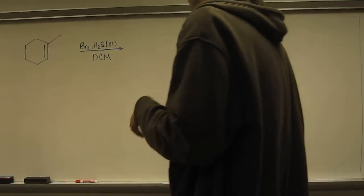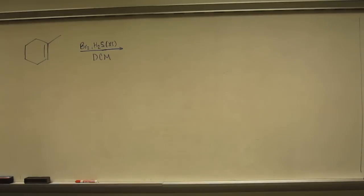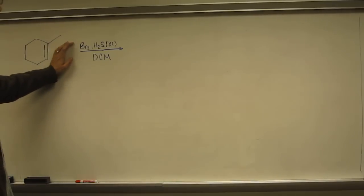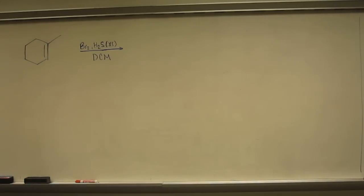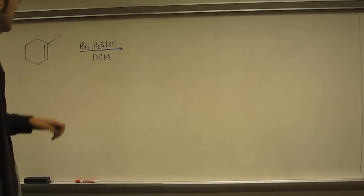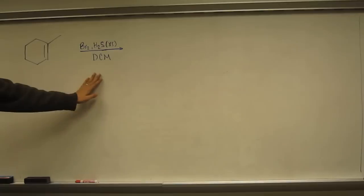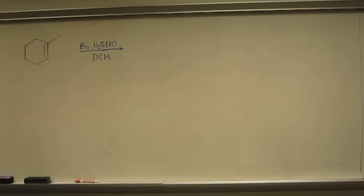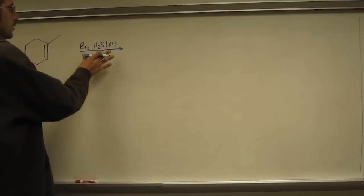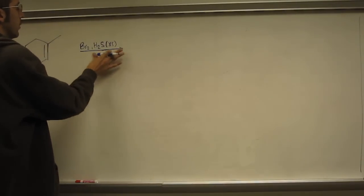Taking this alkene and reacting it with bromine and hydrogen sulfide. Notice it says excess hydrogen sulfide and DCM. Now DCM, that's just the solvent, so it's not going to participate in the reaction. You can just kind of get rid of it.